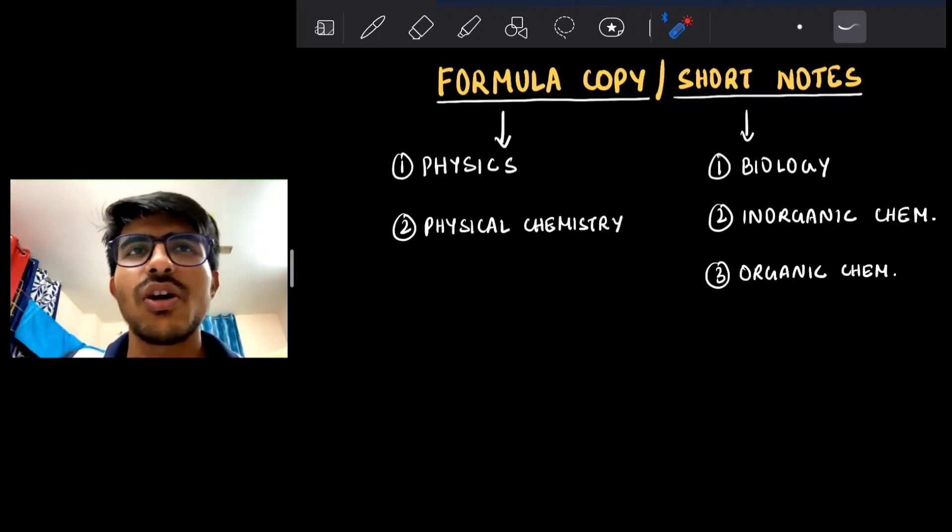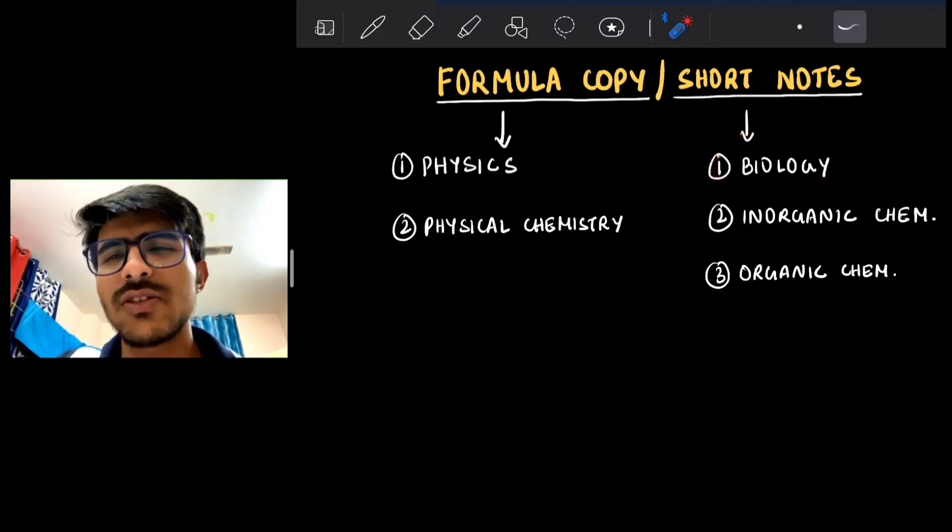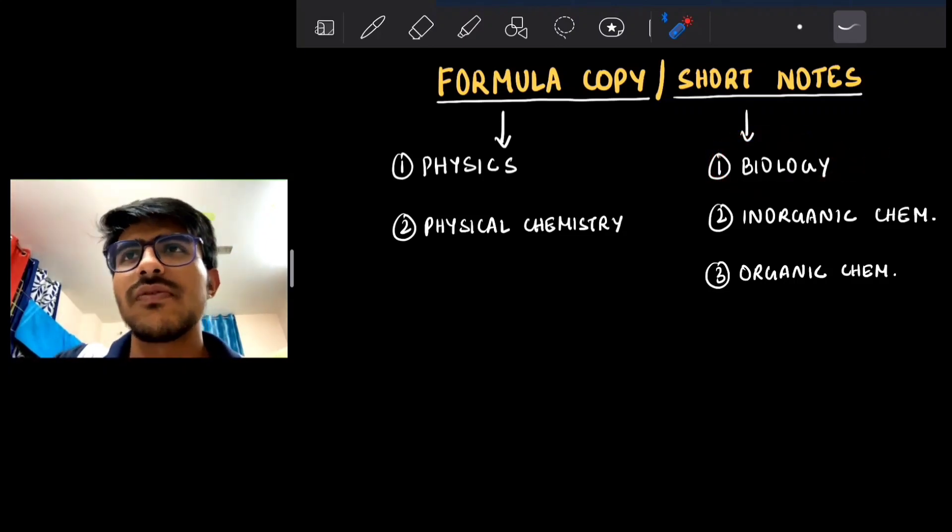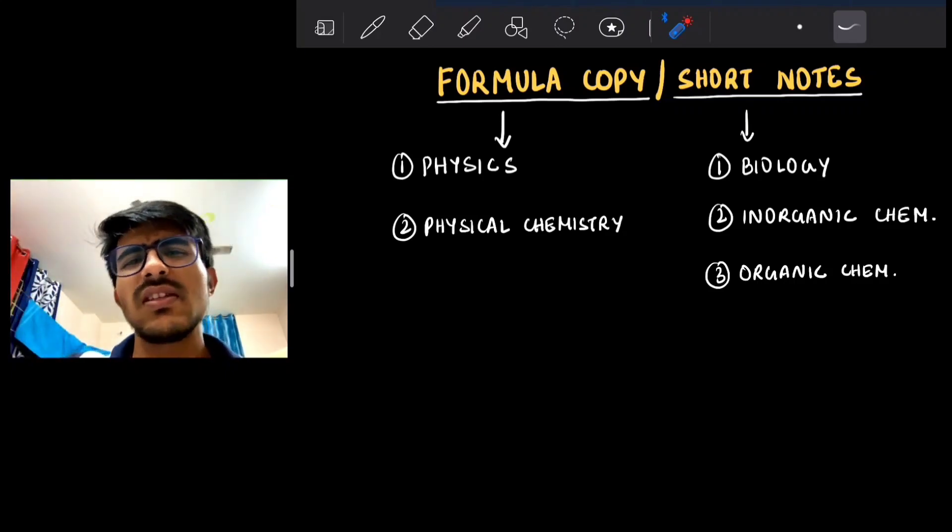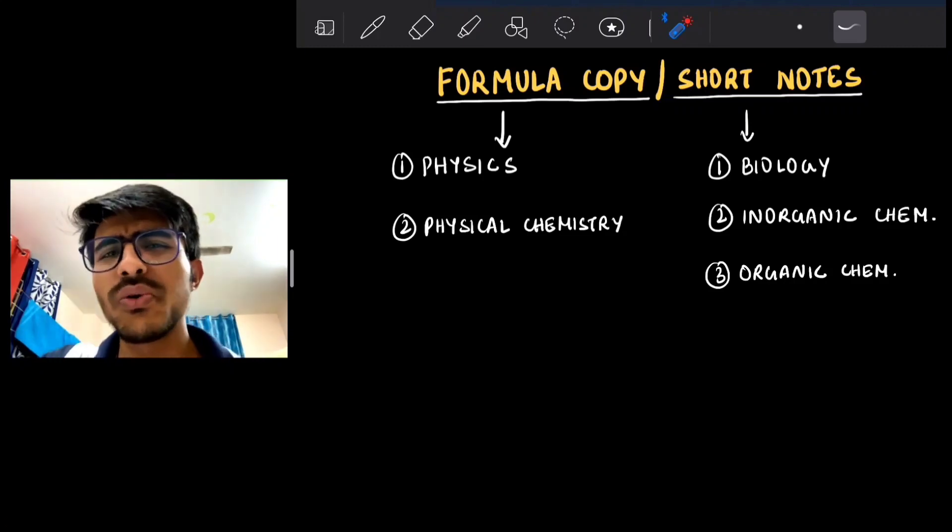Like in biology, you have some very factual chapters like evolution and biotechnology where you can make short notes. In chemistry, you have some very theoretical chapters like polymers, biomolecules, and chemistry in everyday life. You just need to make one-page sheets and paste them to the wall. From these three chapters, you have one or two questions coming, so this will really help you in no time.